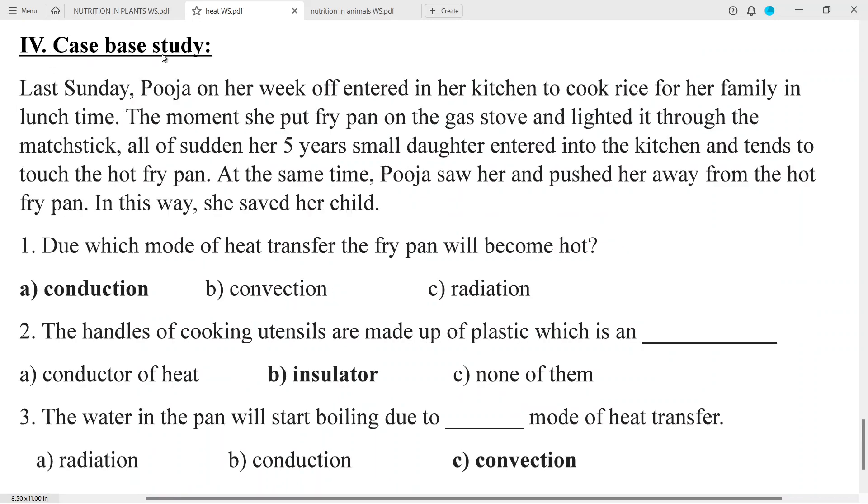Part 4, Case Study. Last Sunday Pooja entered her kitchen to cook rice for her family at lunch time. The moment she put the fry pan on the gas stove and lighted it, all of a sudden her 5 year old daughter entered into the kitchen and tried to touch the hot fry pan. At the same time Pooja saw her and pushed her away from the hot fry pan. In this way she saved her child. Question number 1: Due to which mode of heat transfer will the fry pan become hot?